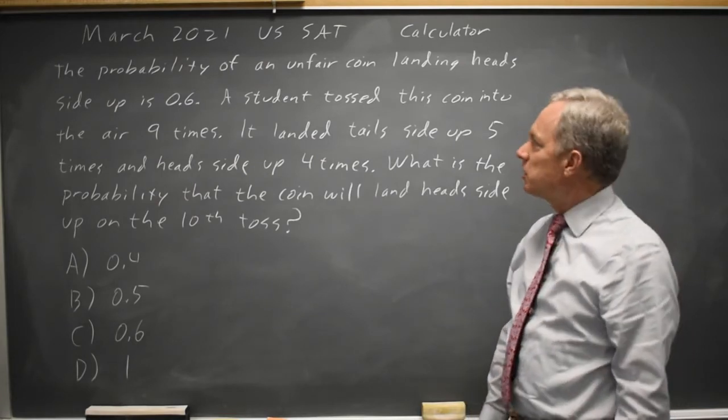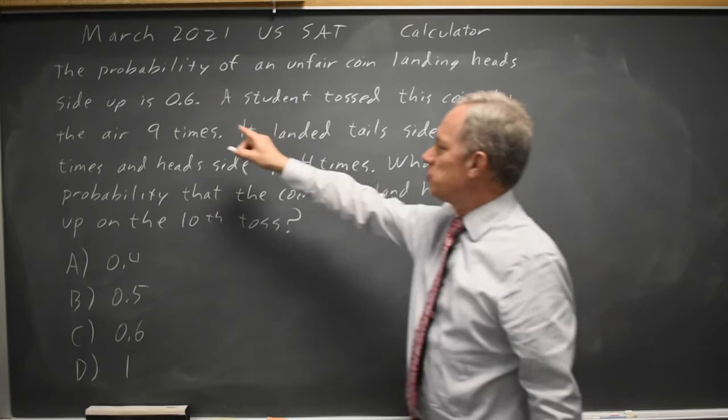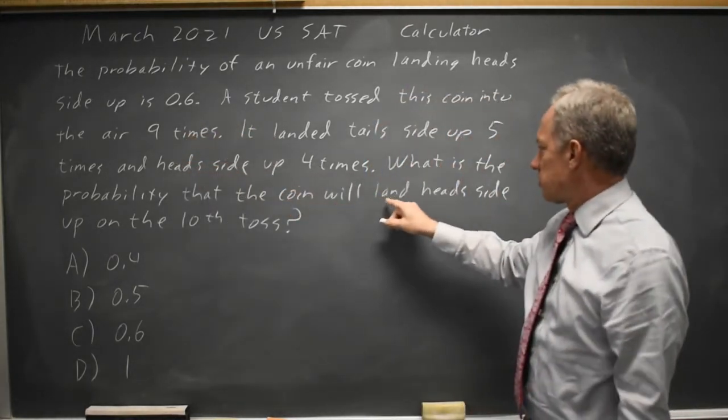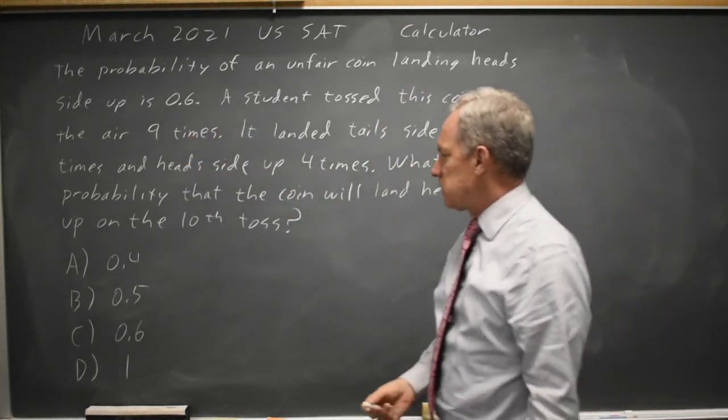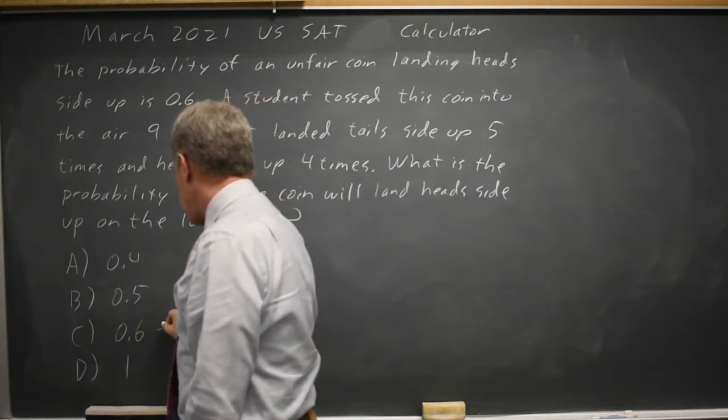The probability of heads is still 0.6. They're asking what's the probability that the coin will land heads side up on the 10th toss, and that is 0.6. That was the probability that was given.